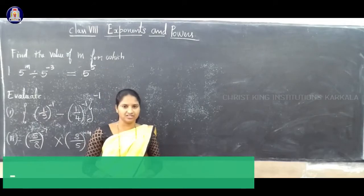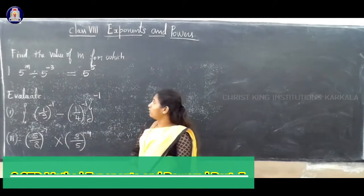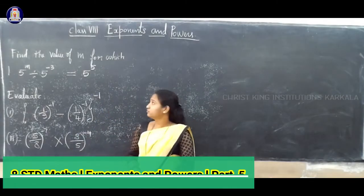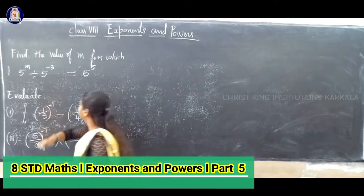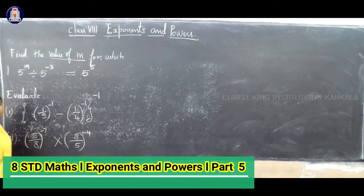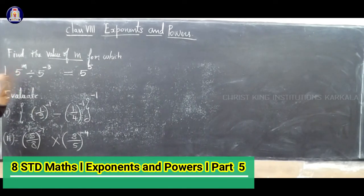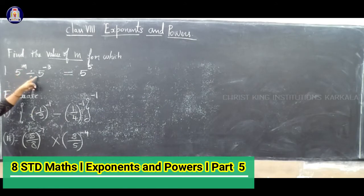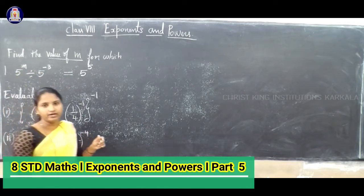The next question: find the value of n for the first one. You will find the value of n in this question. The question is given: 5 power n divided by 5 power minus 3 is equal to 5 power 5.